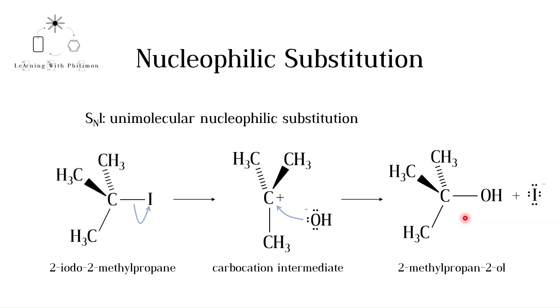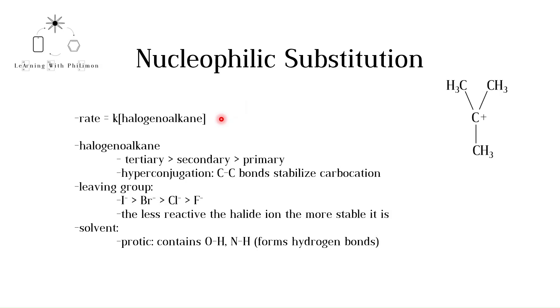Now let's take a look at what factors affect the rate of SN1 reactions. The rate of the reaction depends only on the concentration of the halogenoalkane. The rate equation will have the following format. Increasing the concentration of the nucleophile does not increase the rate of the reaction. For more on rate equations please watch the videos in the chemical kinetics playlist.